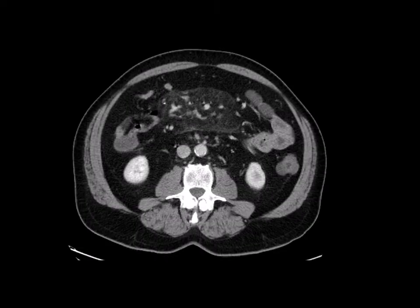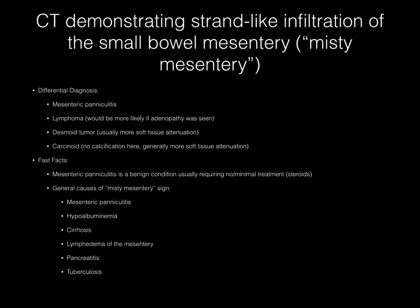Now pause your media player. This axial CT image demonstrates strand-like infiltration of the small bowel mesentery, the so-called misty mesentery sign. The differential diagnosis should include mesenteric panniculitis, which I feel is most likely here. Lymphoma is a possibility, although this would be more likely if adenopathy was present. A desmoid tumor could be added to the differential, although these are usually more soft tissue attenuation. A carcinoid tumor, while it could be included in this differential diagnosis, would generally also be more soft tissue in attenuation and would typically have calcifications associated with it.